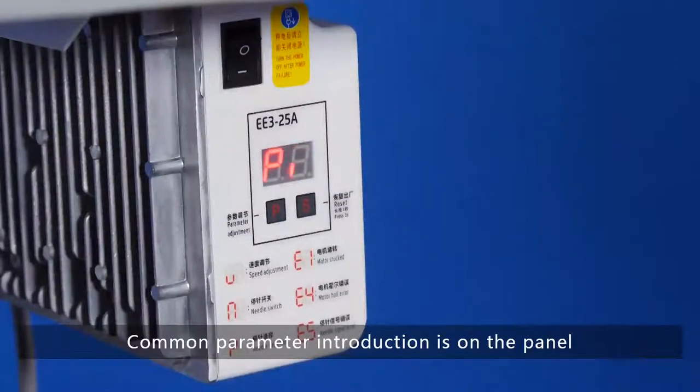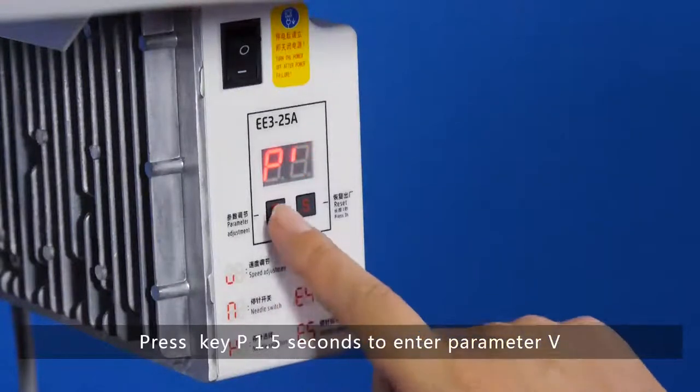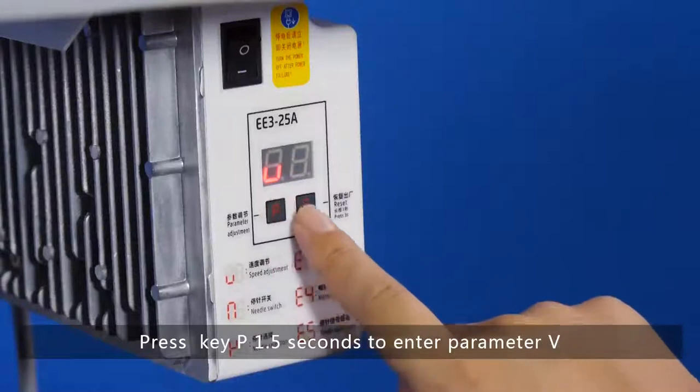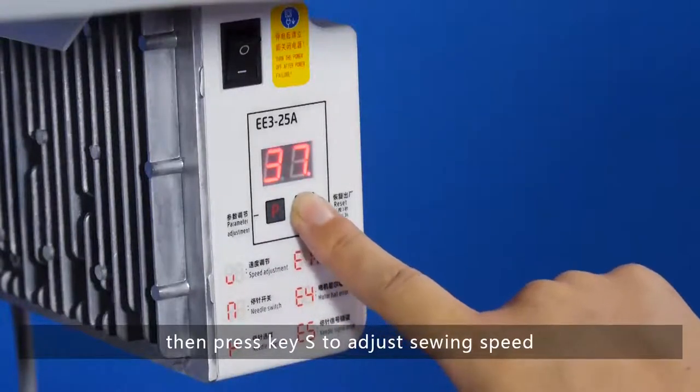Common parameter introduction is on the panel. Press key P 1.5 seconds to enter parameter V, then press key S to adjust sewing speed.